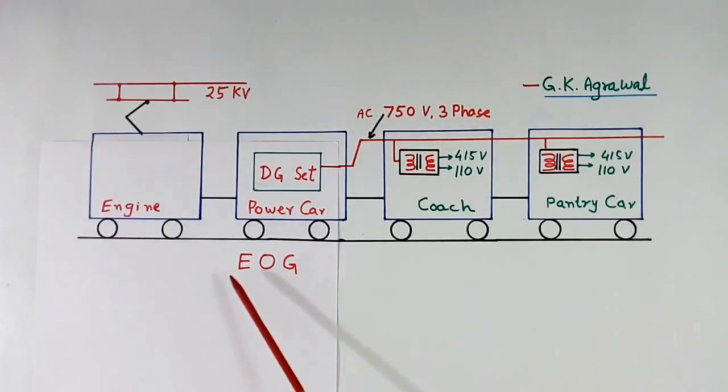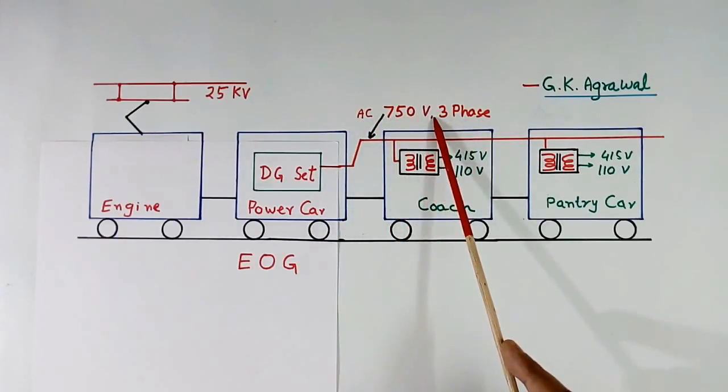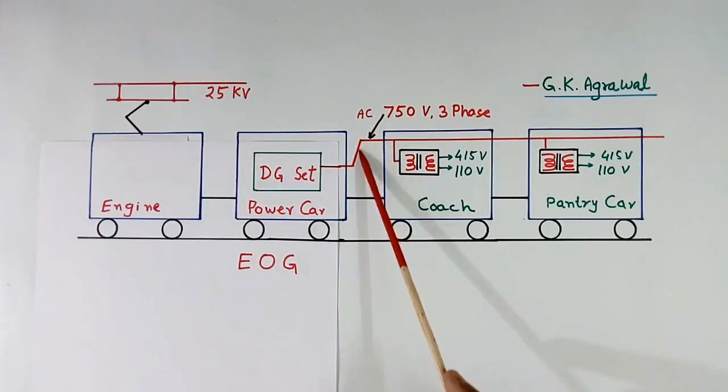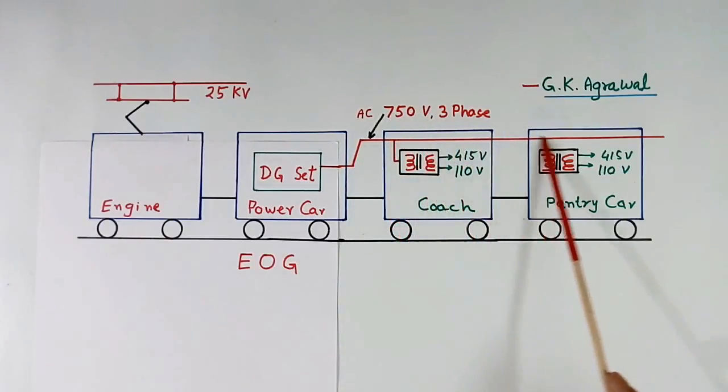This is EOG, End On Generation method. This is coach. Coach requires 415 volt AC for some loads, and for some loads it requires 110 volt single phase AC. Here I have shown one power car. This has DG set, diesel generator set. A DG set generates 3 phase AC 750 volt. We require 415 volt but it generates 750 volt 3 phase AC. Here I have shown only one wire, there will be actually 3 wires. This 750 volt AC will go to all coaches. Here you see the same wire is going to every coach.